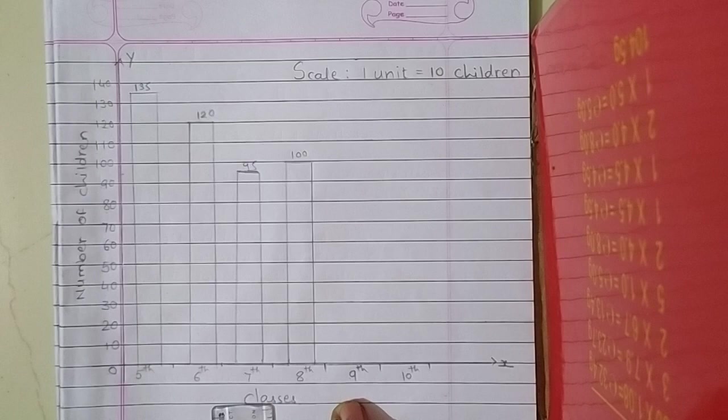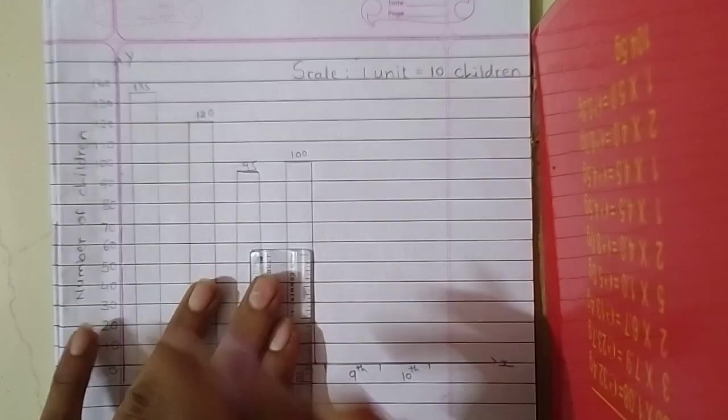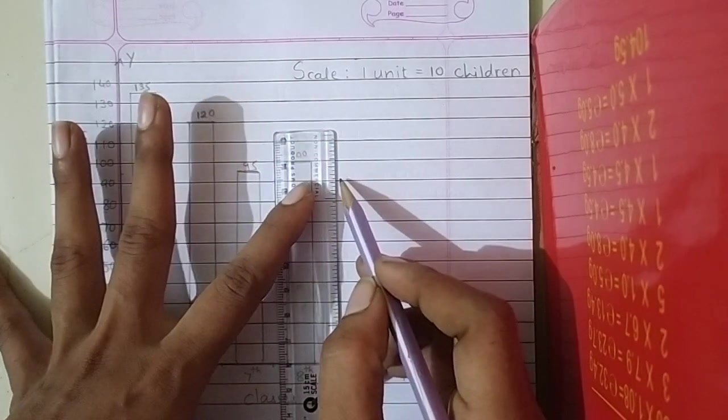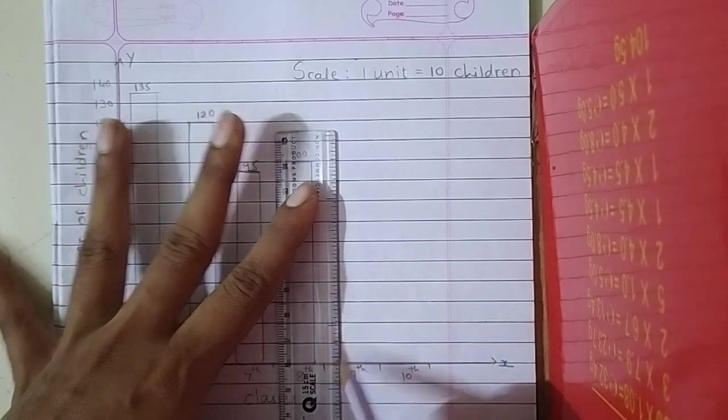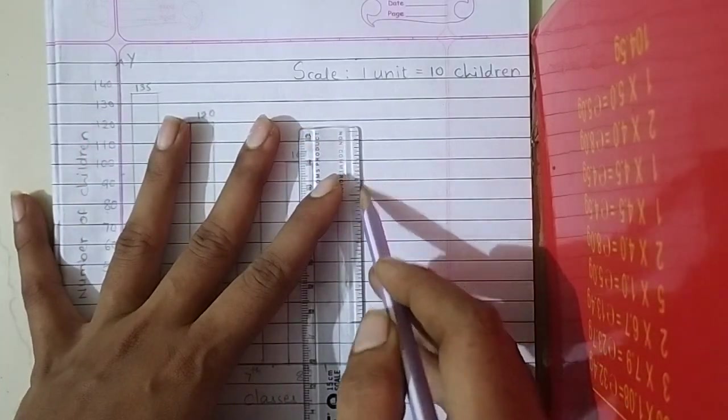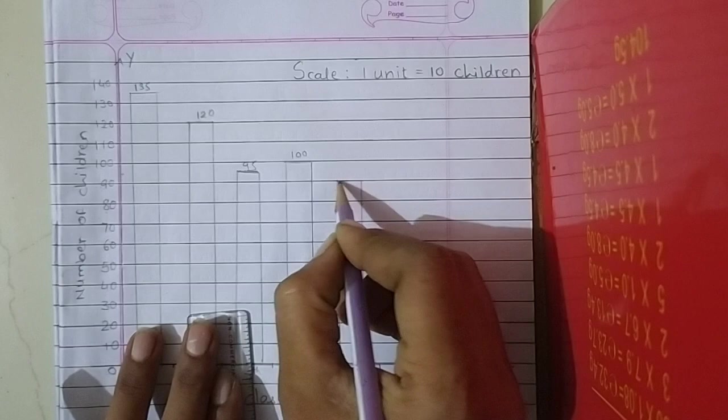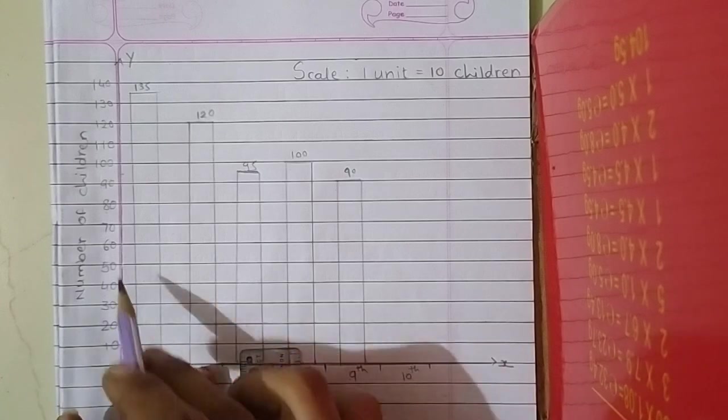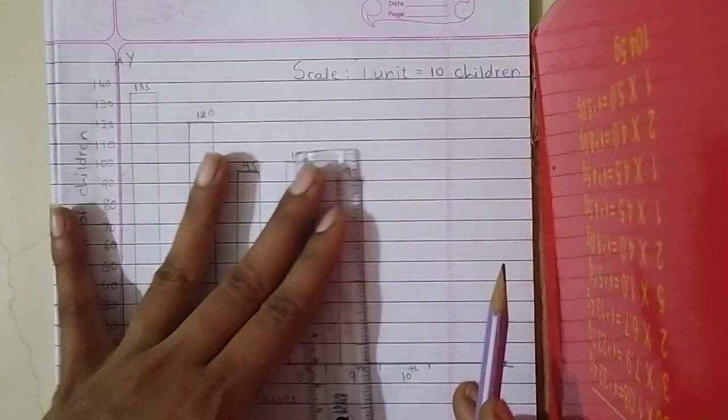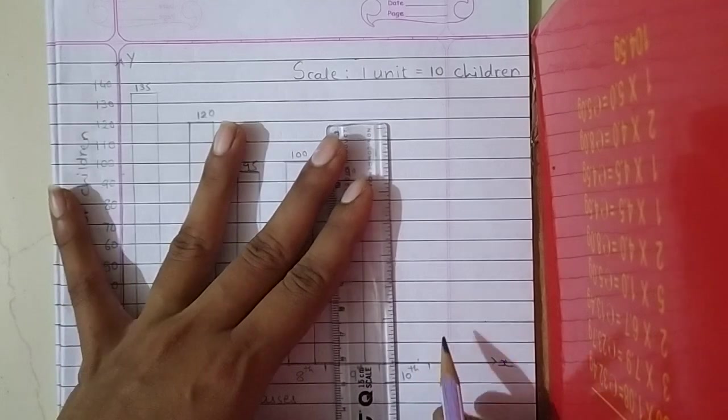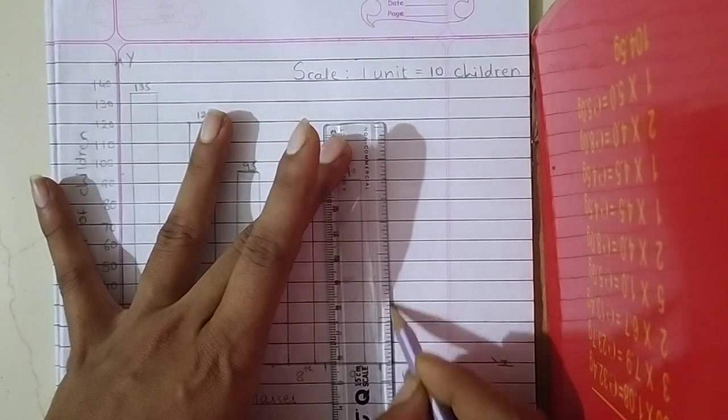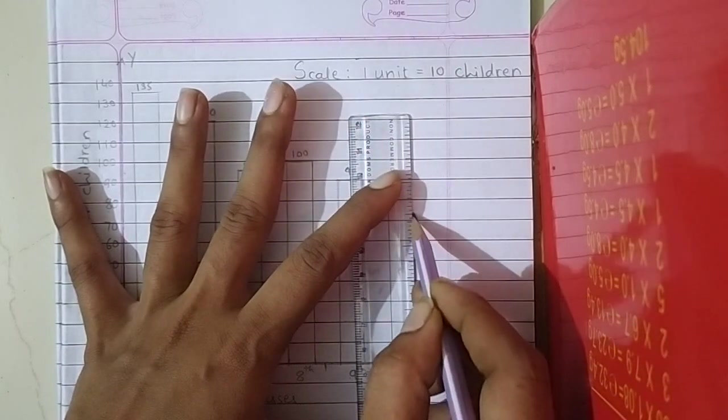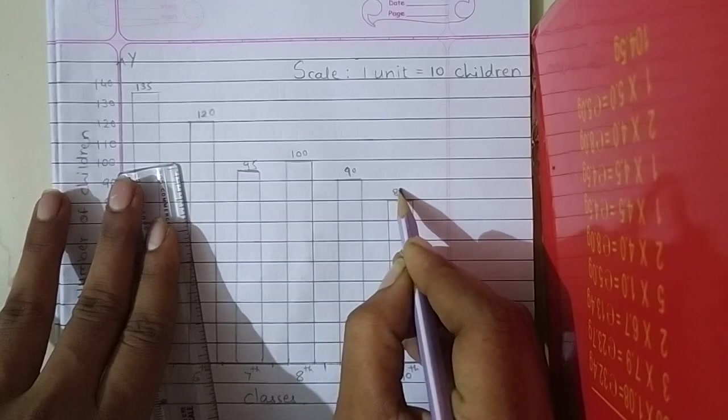Now 9th, 9th is 90. Where is 90? Here. Next 10th, in 10th class, 80 strength. 80, here.